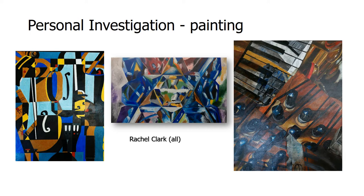This next student is Rachel Clark, who, like Anna, was a very keen painter. Again, large-scale acrylic paintings — about four foot tall. Rachel's theme started off with surfaces and then developed into musical instruments, looking at the shapes and forms in different instruments. They became kind of cubist paintings with overlapping sections from different musical instruments, creating an abstract composition rather than a fully representational one. But she could also paint very realistically as well.